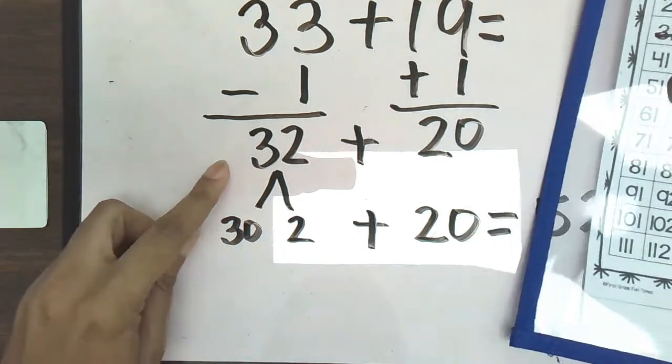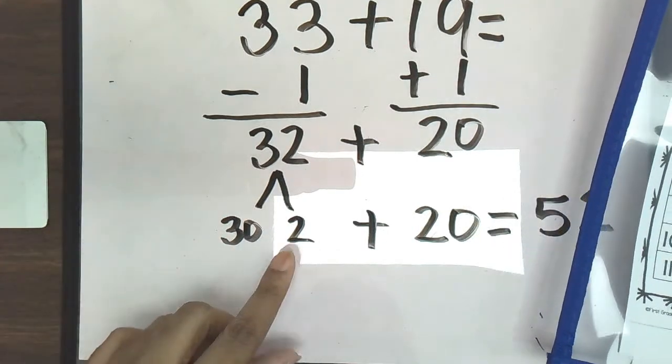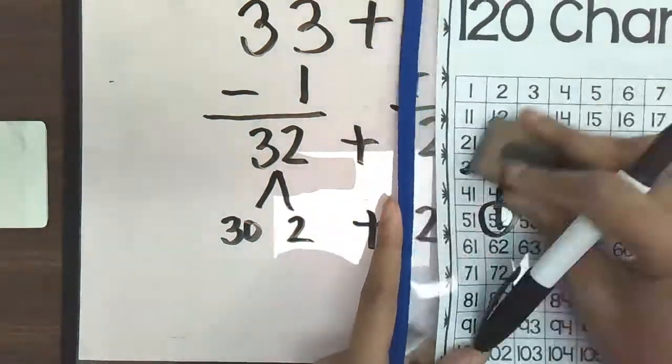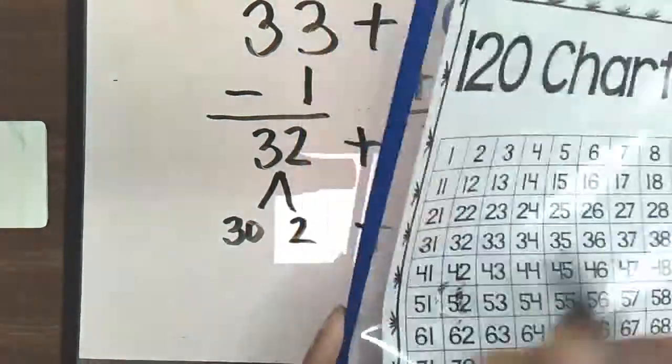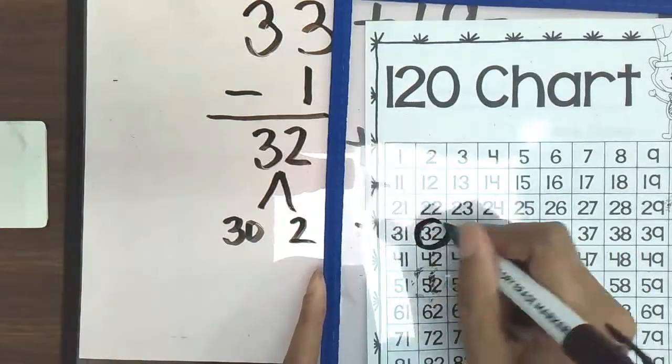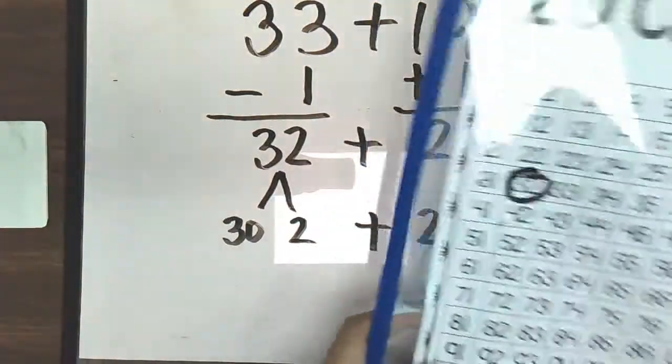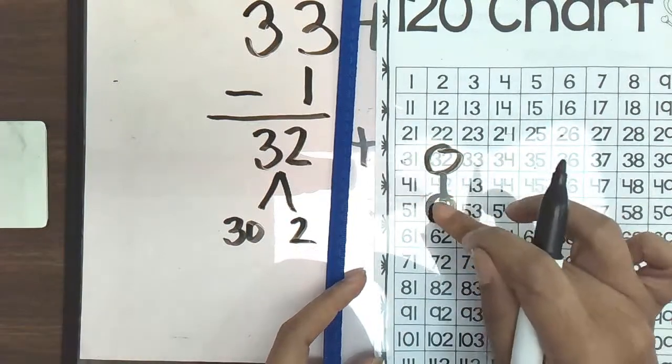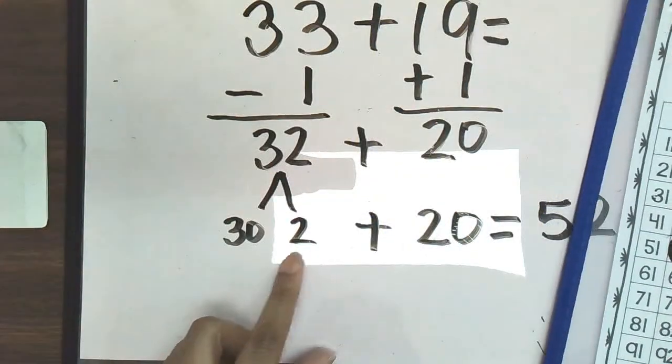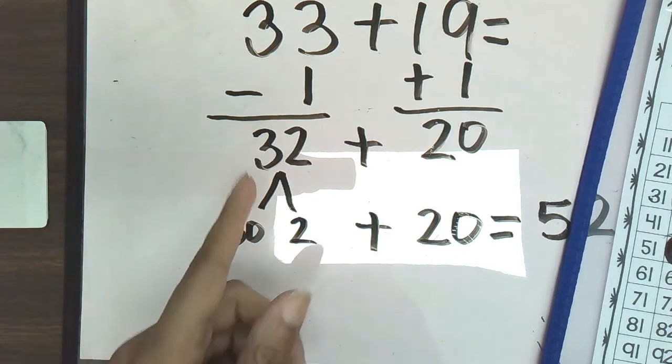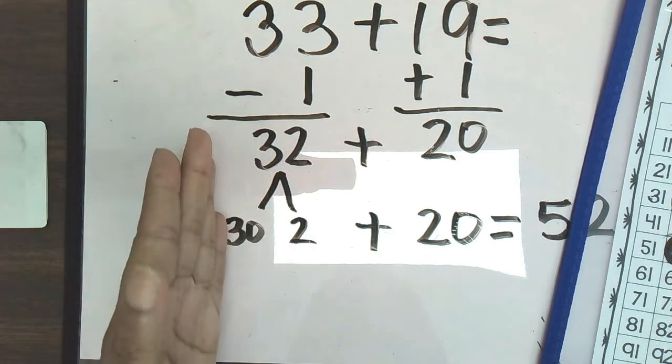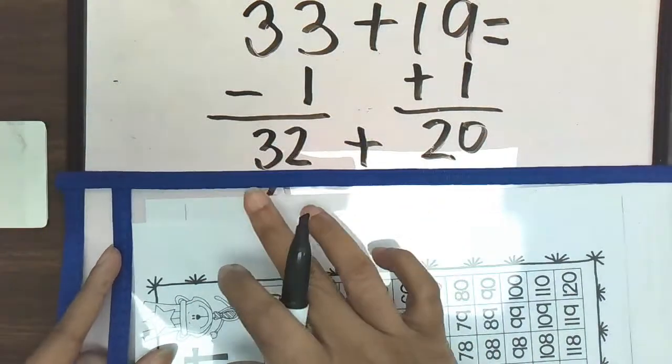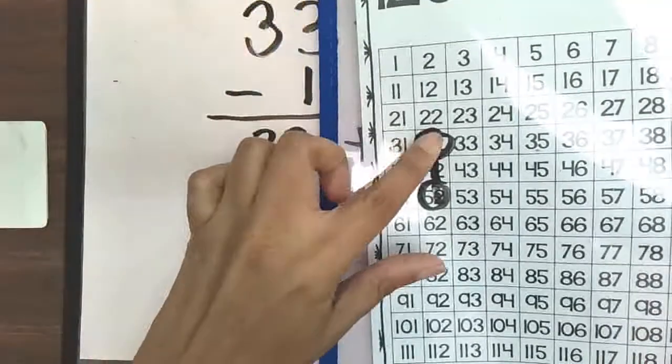So showing you how to decompose it further into a 10 is another way. Or you can just, as I showed you in the first example, just solely find 32 on your map and then add 20. Go down 2 tens. 1, 2. And still arrive at the same answer. So this way to further decompose it is for students who need a little more understanding of breaking our numbers into 10s and 1s. But if we've mastered that, we can just go straight to 32 plus 20 by using the 120s chart.